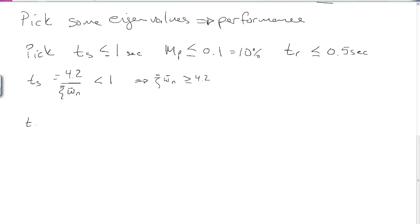The rise time is approximately 1.8 over omega n bar, which has to be less than or equal to 0.5, which means omega n bar needs to be greater than or equal to 3.6. And finally, mp is given by e to the minus pi times zeta bar divided by the square root of 1 minus zeta bar squared, which gives us that zeta bar has to be greater than or equal to 0.5912.